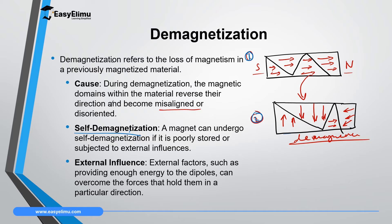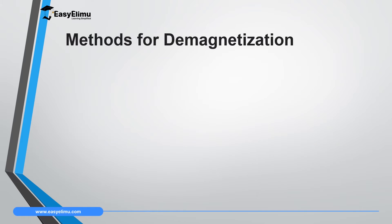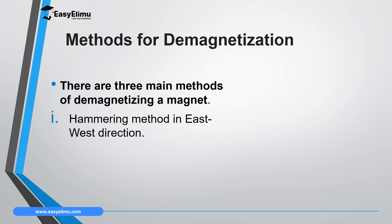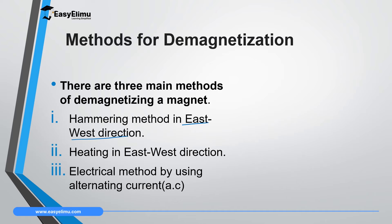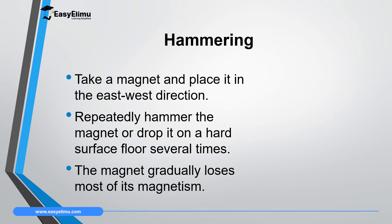There are three main external influences that can demagnetize a material. The first is the hammering method in an east-west direction — the direction is very important. The second is heating in an east-west direction. The third is the electrical method using alternating current, also with the material placed in an east-west direction. Note the differences from magnetization: hammering for magnetization uses north-south direction, and the electrical method for magnetization uses DC rather than AC.